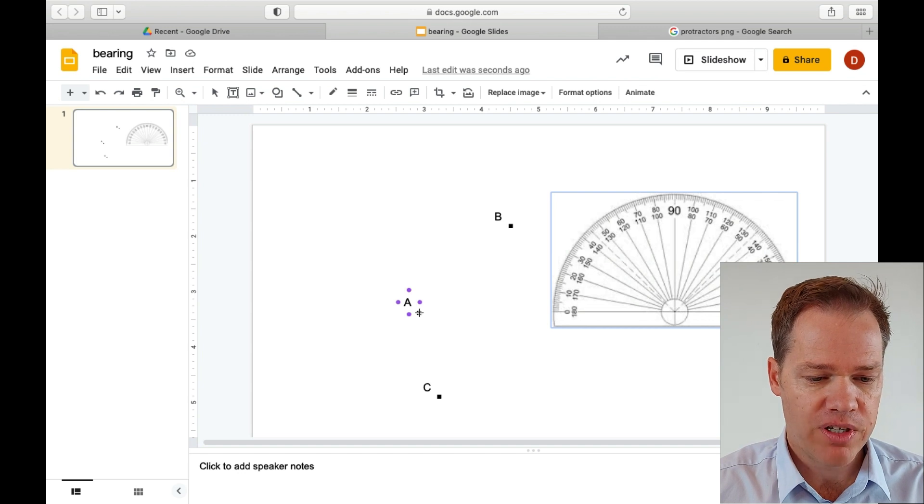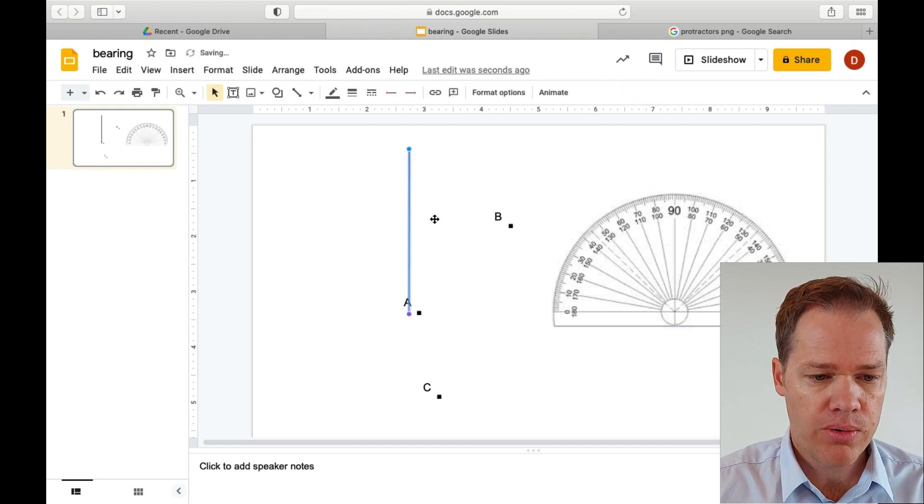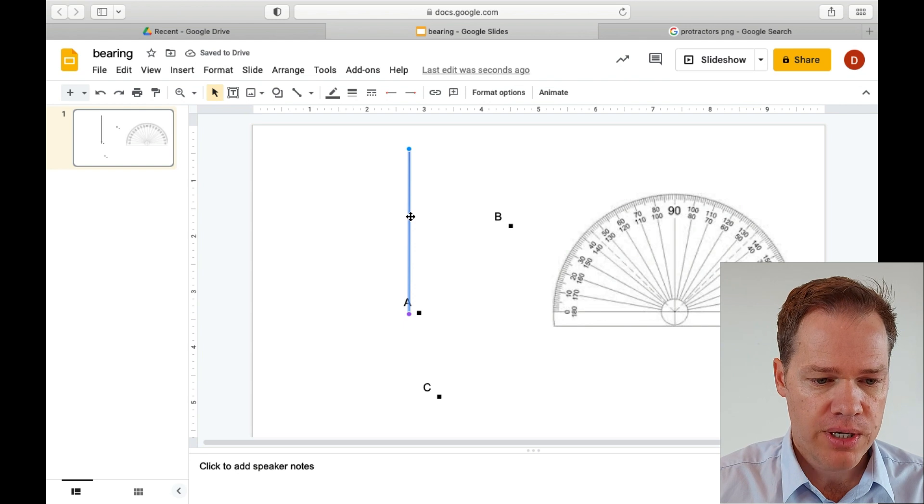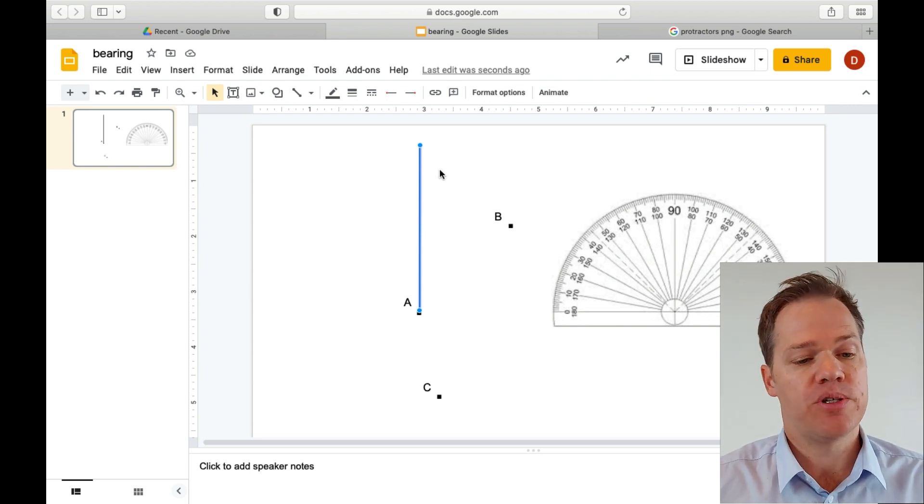So we're going to draw that vertical line, and usually it jumps around a bit, but that's fine. And I've also posted a video on the three different norths. And I explain in that video why grid north is good enough for navigation purposes.